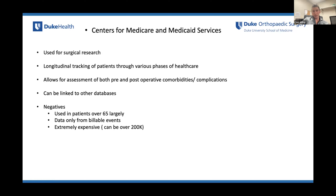Another commonly used database is the Centers for Medicare and Medicaid Services. This is different from NIS — it allows for longitudinal tracking of patients through various phases of healthcare, tracking Medicare and Medicaid patients through PT, outpatient visits, and more. It also allows for pre- and post-operative comorbidities and complications, and can link to other databases to increase numbers. Negatives: not useful for young patients since it's Medicare and Medicaid-based, it's only data from billable events, and it is extremely expensive — some of these can cost over $2,000 depending on institution.